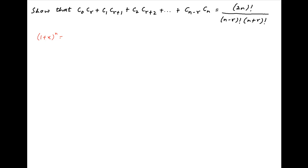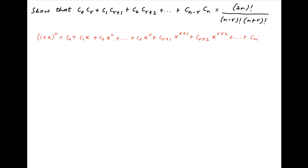The binomial expansion of (1 + x)^n is equal to C0 plus C1·x plus C2·x² plus and so on, plus Cr·x^r plus C(r+1)·x^(r+1) plus C(r+2)·x^(r+2) plus and so on, and the last term is Cn·x^n. Let's call this Result 1.